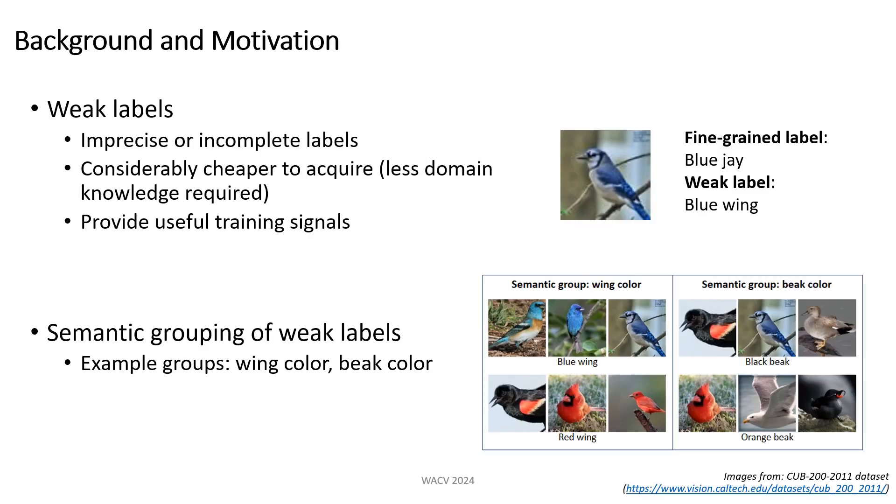We explore the use of weak labels as a cost-effective solution to the problem of visual representation learning. Weak labels are defined as labels that are imprecise or incomplete. For example, in the context of bird species classification, weak labels can be in the form of wing color, which provides an incomplete description for the bird species.